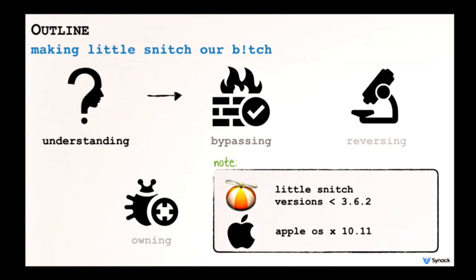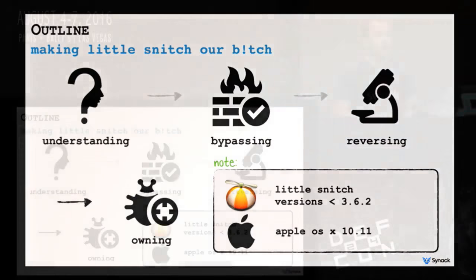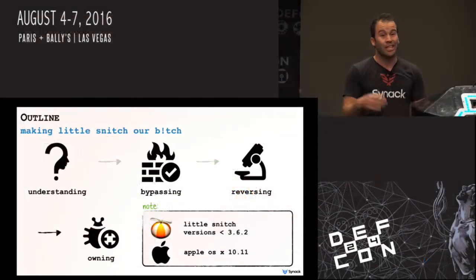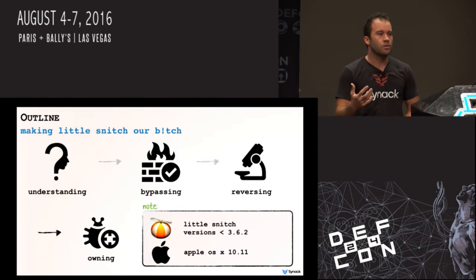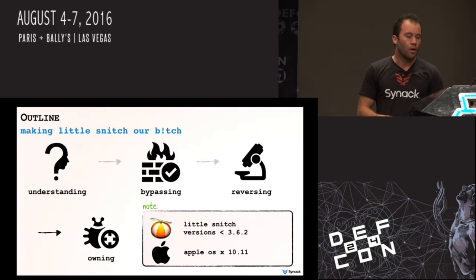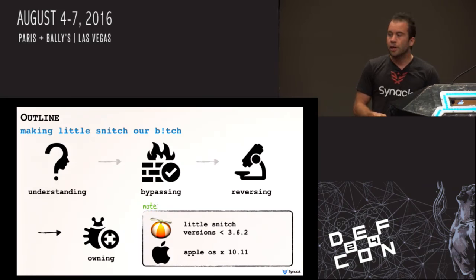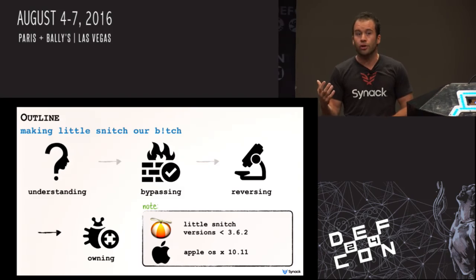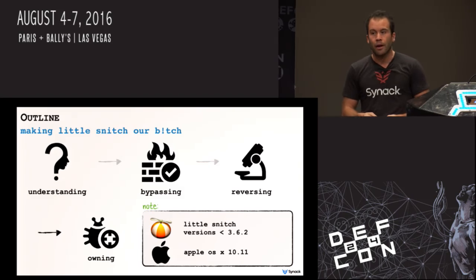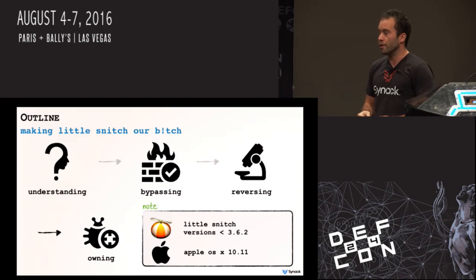We only have 20 minutes, so we're gonna jam through a good amount of stuff. We're gonna start by briefly talking about what Little Snitch is, then talk about how to bypass it — how to exfiltrate data or talk to a command and control server without being detected by the firewall. We'll then talk about reverse engineering the kernel component, looking for a security vulnerability, and how to exploit a bug I found.